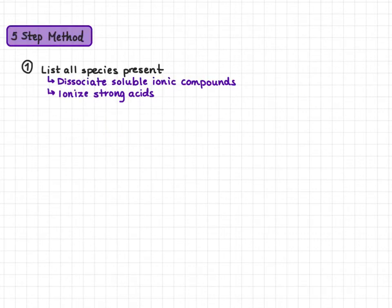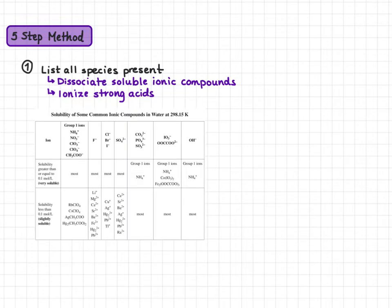The first step in the five-step method is to list all species present in your solution. When you're doing this there are two things to keep in mind. First, you have to dissociate soluble ionic compounds. You can find the solubility of a compound by looking at the solubility chart on page six of your Chemistry 30 data booklet.